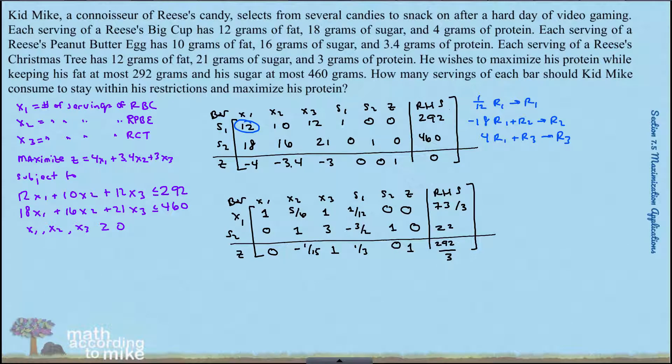All right, one pivot complete. This is our matrix. We do have at least one more pivot because there's a negative in the objective function row. It turns out the next pivot element is the—